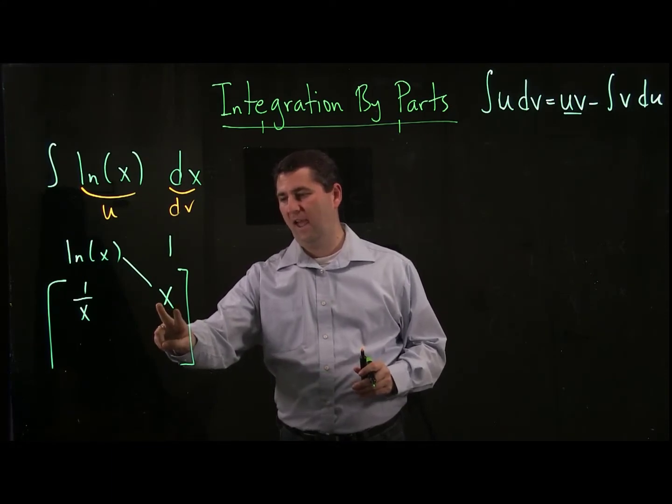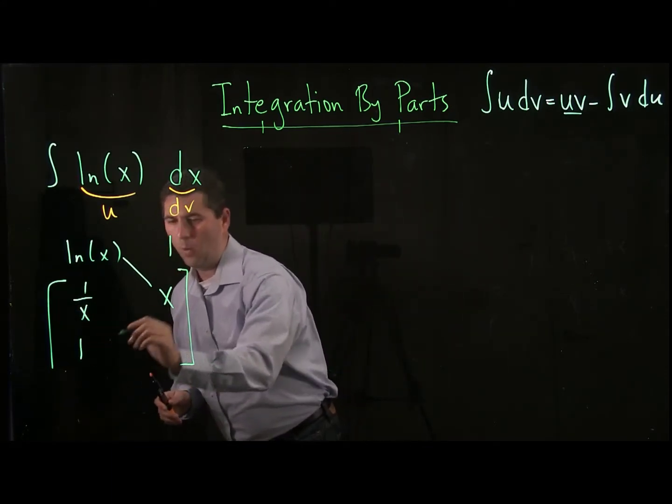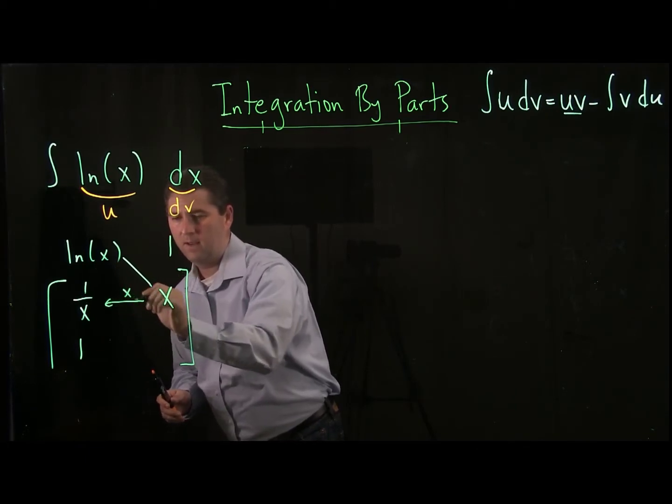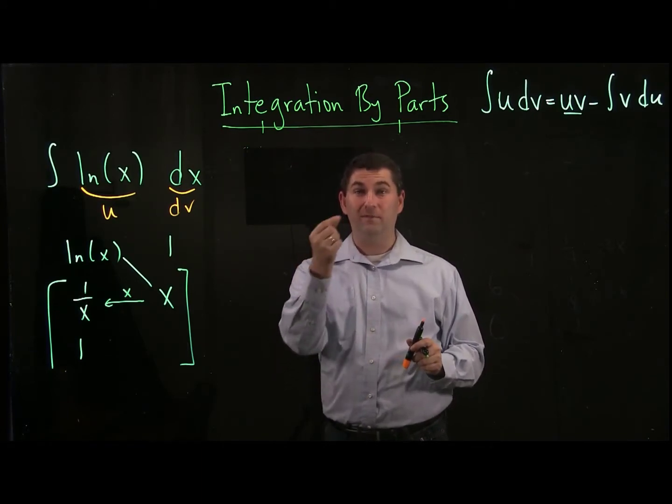So I'm going to actually take this x and move it over. And when I multiply it by 1 over x, I get a 1. So I'm going to move that x over. That's okay to do because I'm just multiplying them, right? It's integral of v du. I'm just multiplying the two.